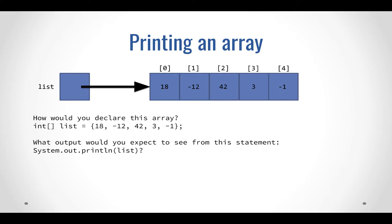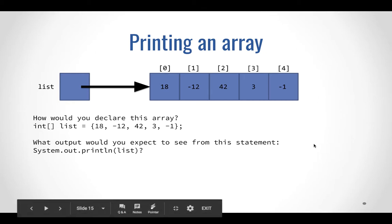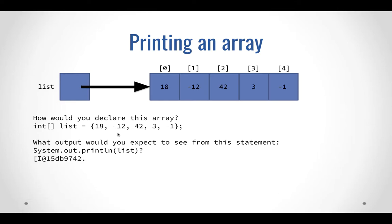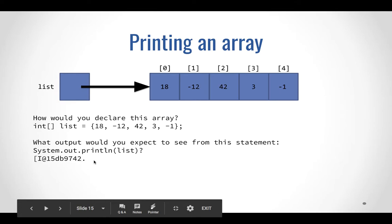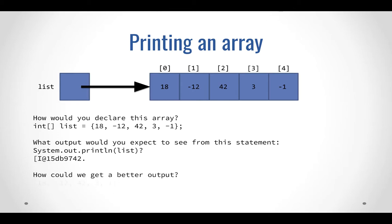If I wanted to print this out, as we've done with variables of type int and type String — when we print out the variable name associated with those variables, we get what we're looking for. But something really kooky happens when we try to print an array: we get this gobbledygook. If I ran this code on my computer I might get one thing; you might get something different. This bizarre output is telling you a little bit about where this box is located in memory — some kind of identifier your computer uses to find list.